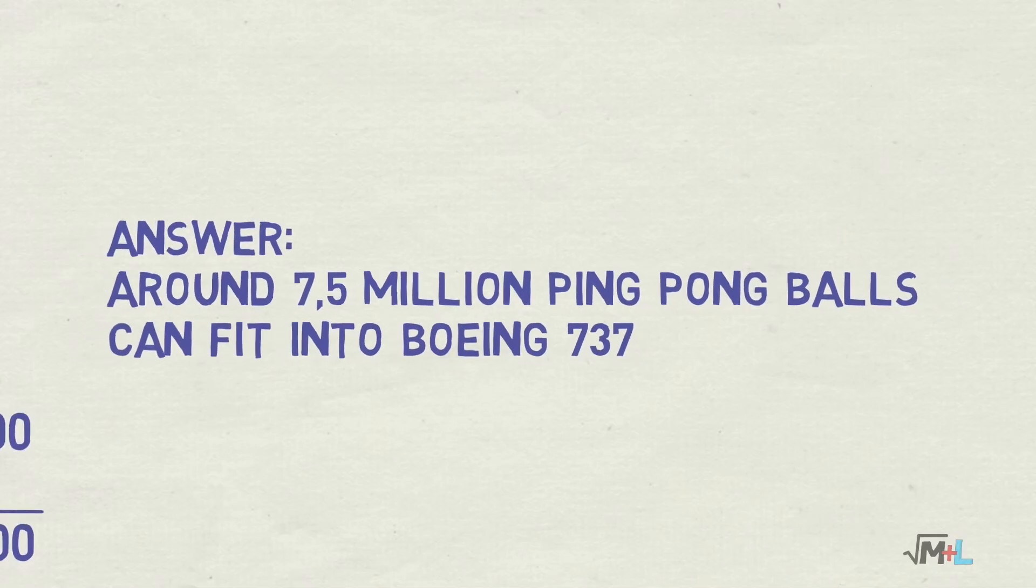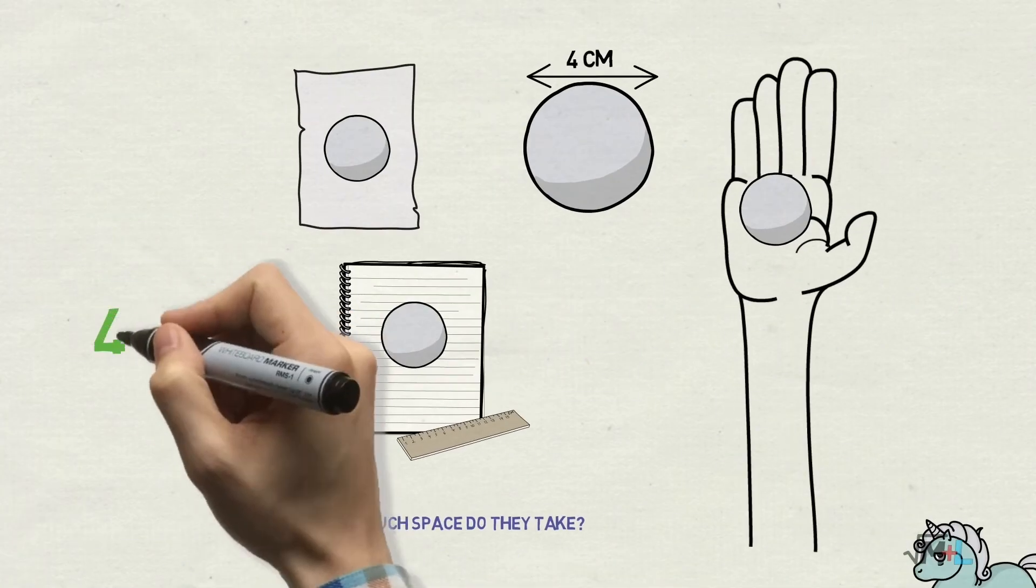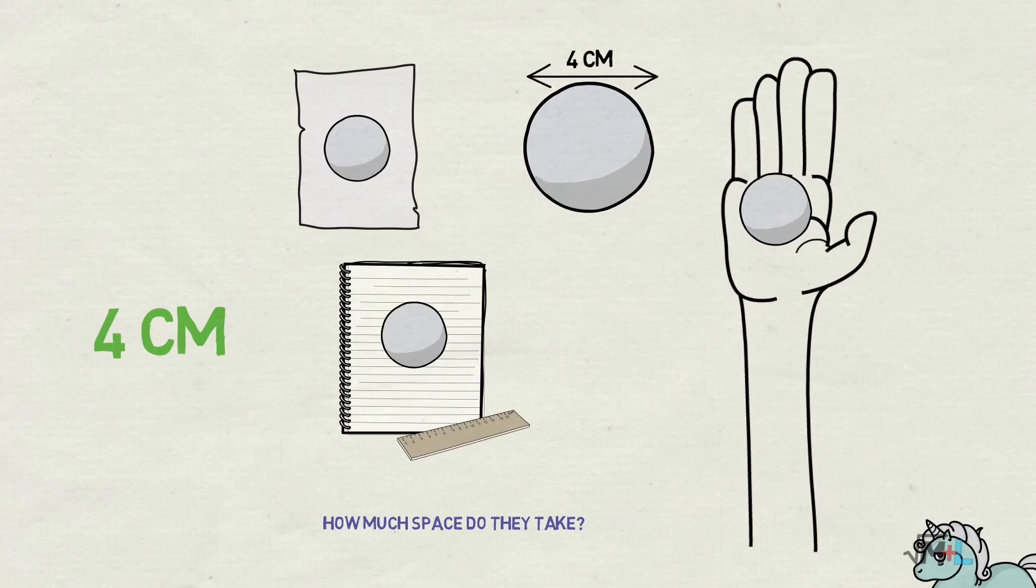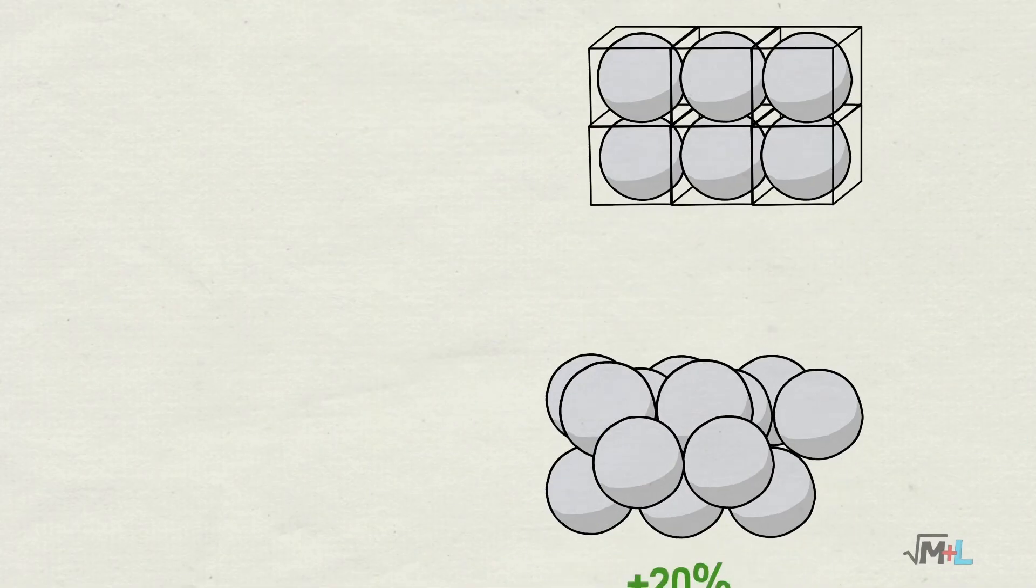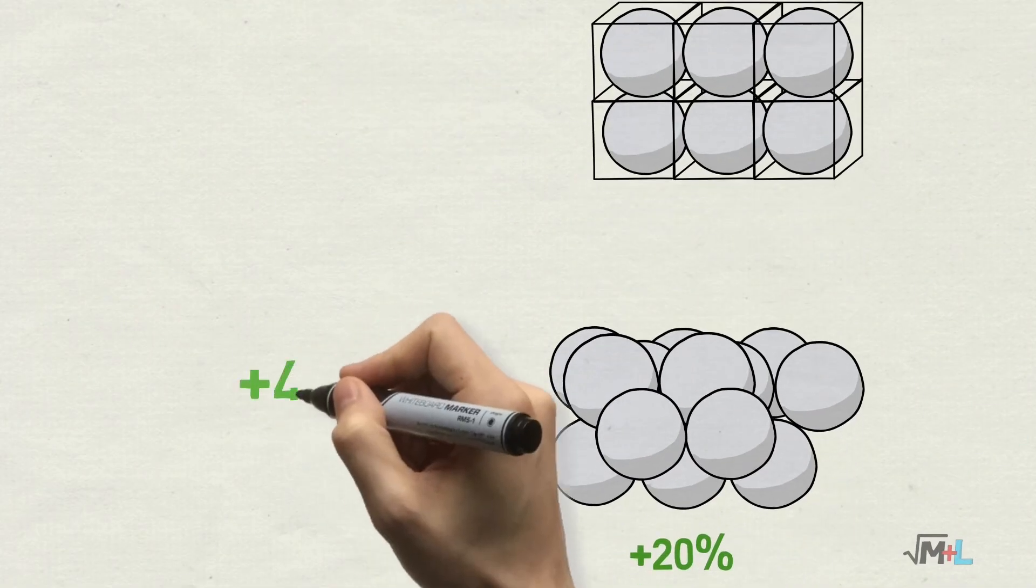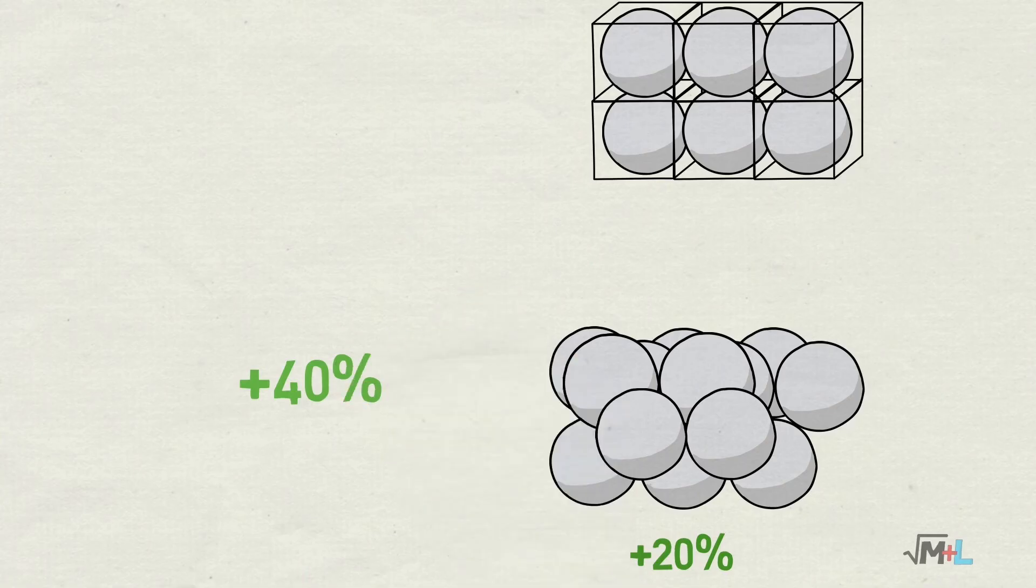Now let's verify it. Ping pong ball is really 4 centimeters in diameter. It was right on the spot. You could expect it to be round number so you were likely to hit bullseye here if you were guesstimating carefully.